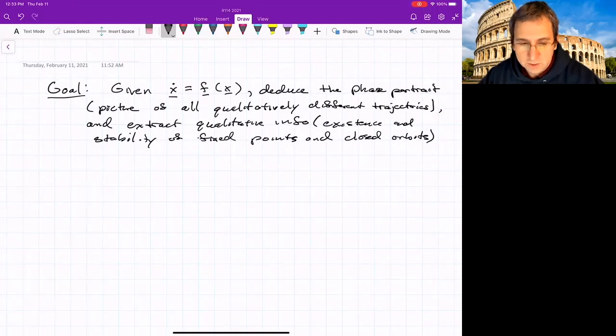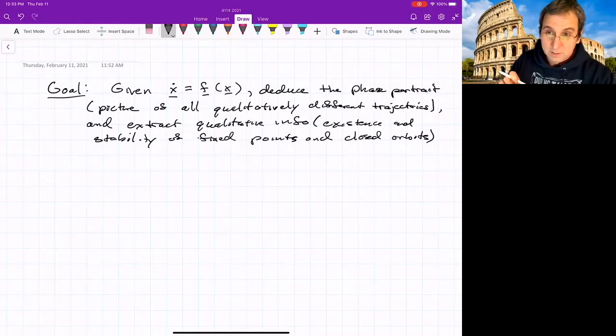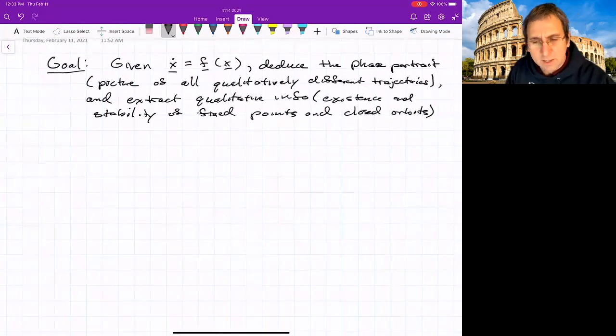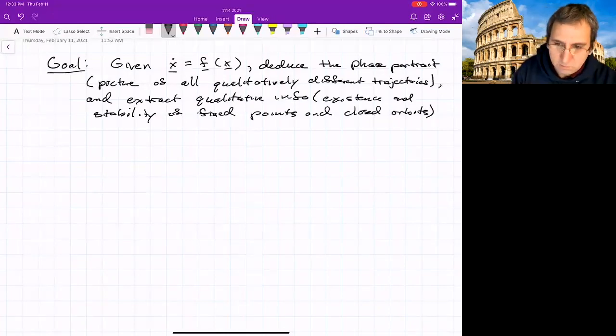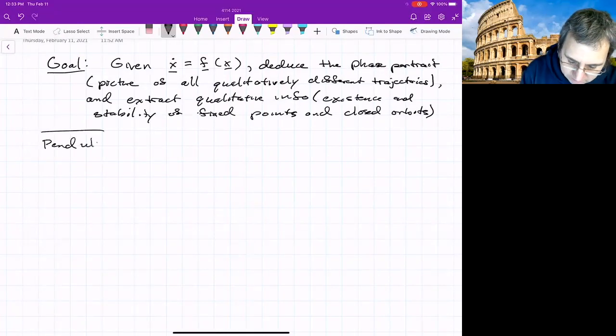So that's our general goal when we analyze a 2D autonomous ODE. There's a few tools that we can use to do that. Some of them were topological that we talked about last time. Often we'll start with fixed points. So if we can find fixed points, we can analyze what the dynamics looks like near fixed points. Let me give another example. Right now I'll do the pendulum, which is another common example.